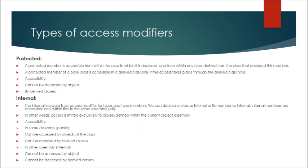The third type is Protected. A protected member is accessible from within the class in which it is declared, and from within any class derived from the class that declared this member. A protected member of a base class is accessible in a derived class only if the access takes place through the derived class. In terms of accessibility, protected members cannot be accessed by object, but can be accessed by derived classes.